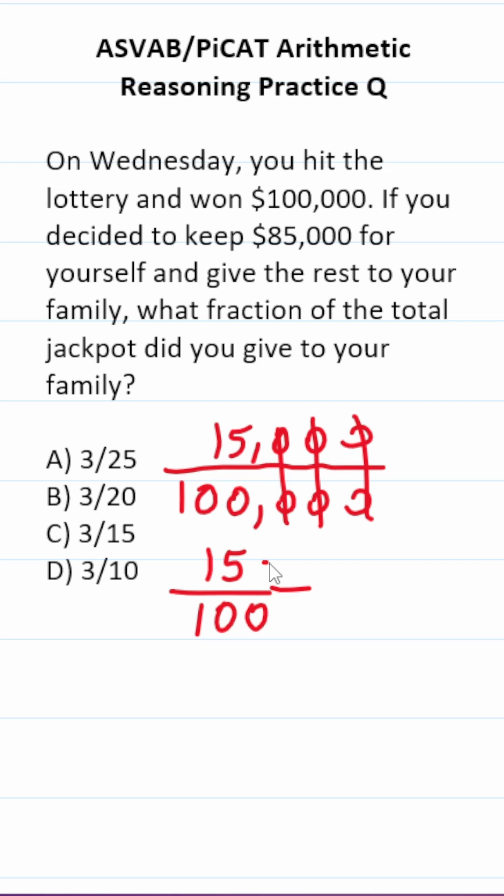You should notice that 15 and 100 have a common factor of 5, so we can reduce this even further. 15 divided by 5 is 3, 100 divided by 5 is going to be 20.